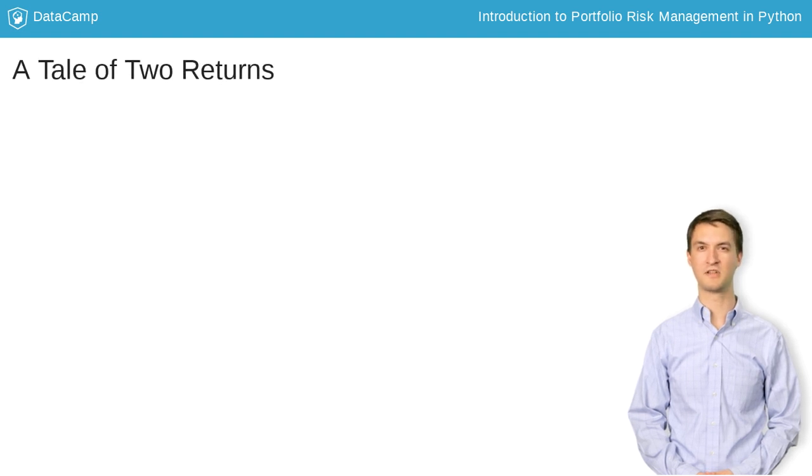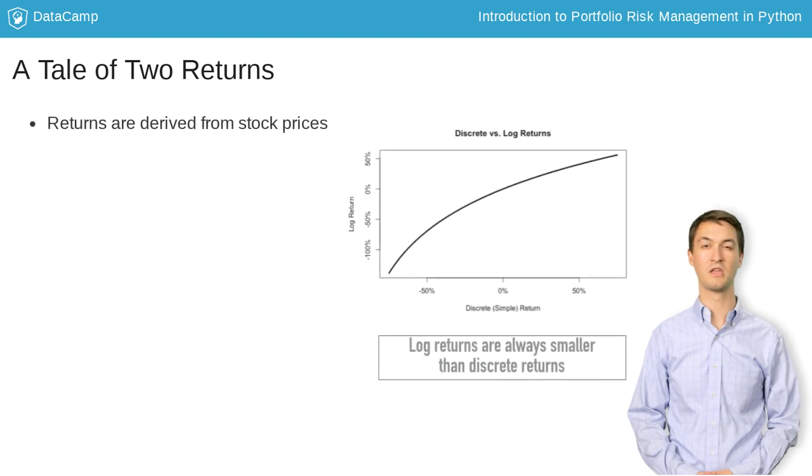Before we get ahead of ourselves, let's do a quick refresher on financial returns. Financial returns are generally derived from stock prices and are expressed as percentages in decimal form. There are two common types of financial returns.